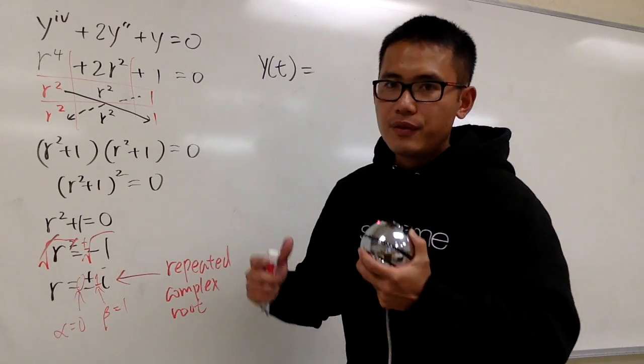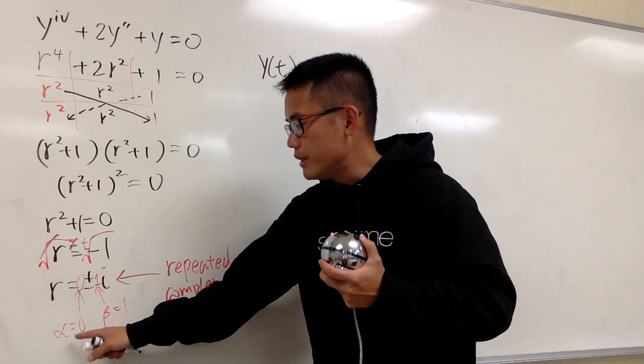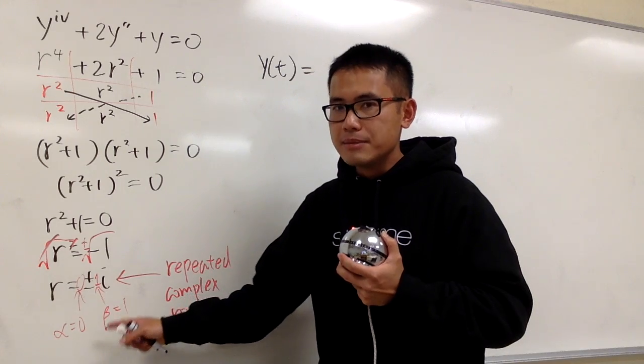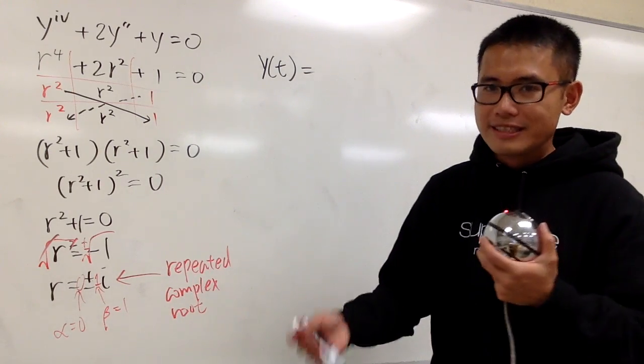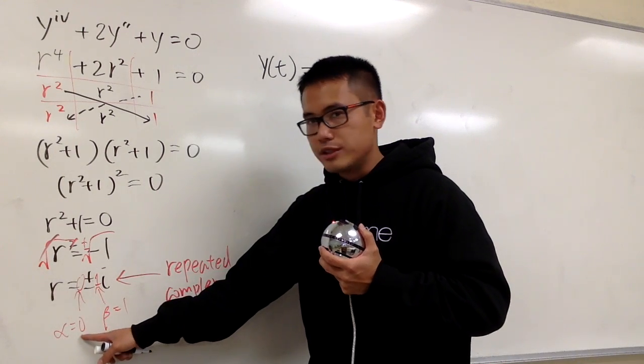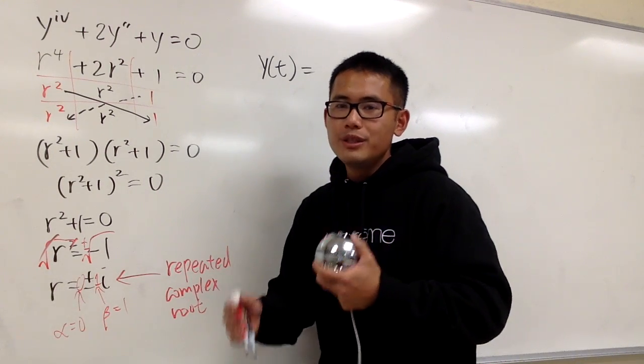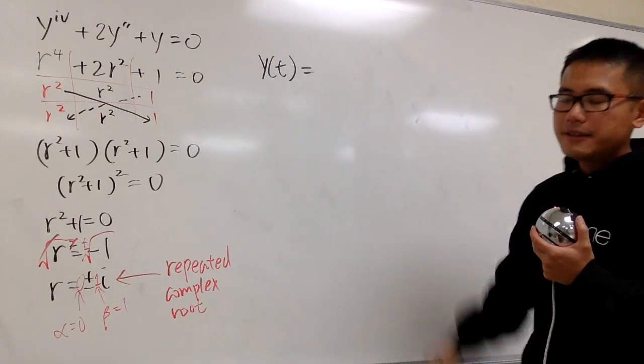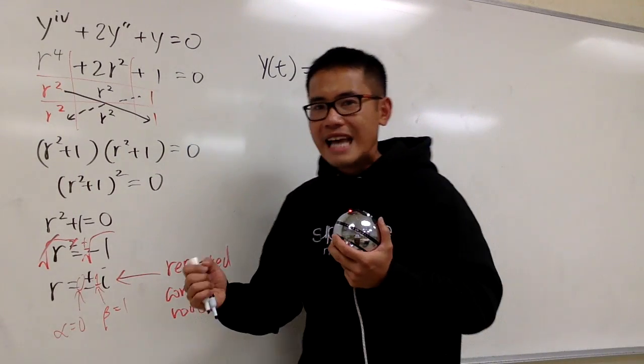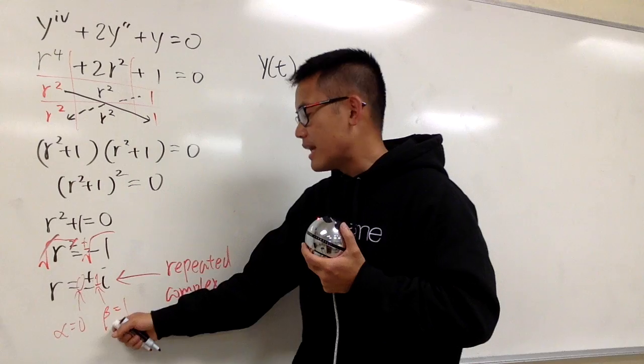So remember, the building blocks for the general solution is e to the alpha t times cosine of beta t, right? And then also you have another one for the sine. But anyways, because the alpha is equal to 0, that means e to the 0t is just going to be 1. So we wouldn't have any e to the whatever. We'll just have sine and cosine beta t.